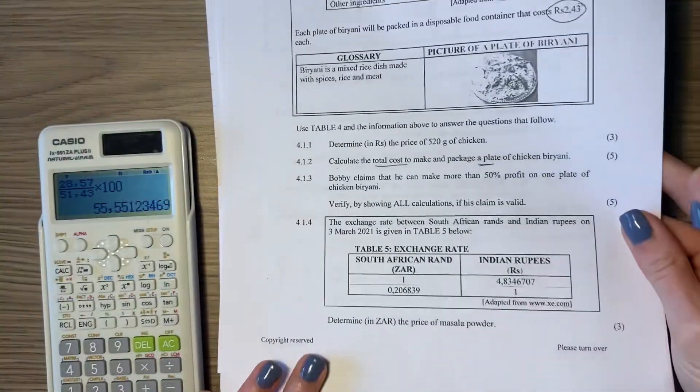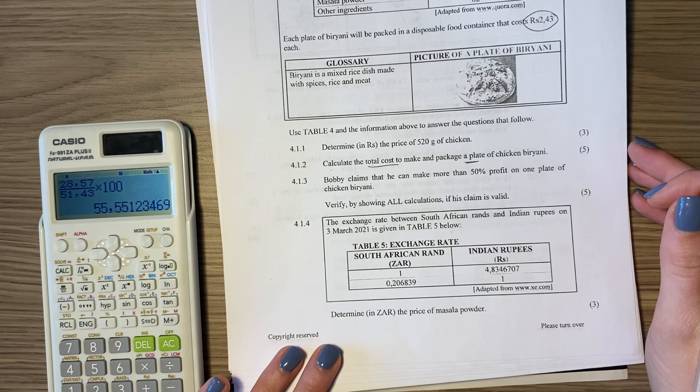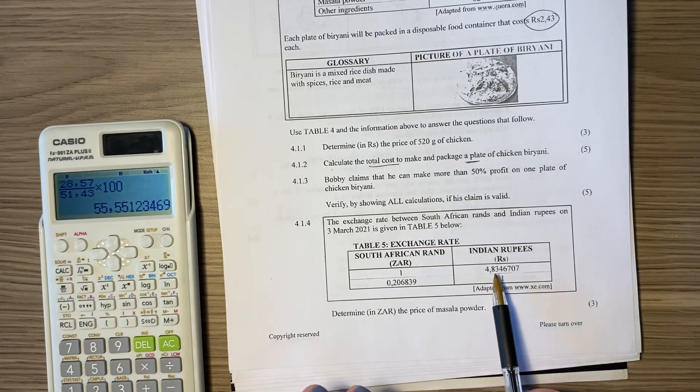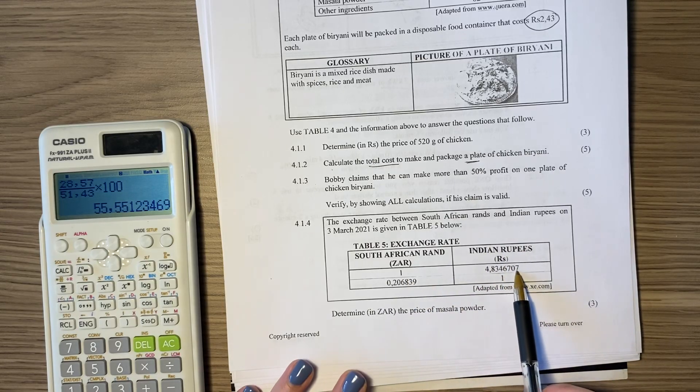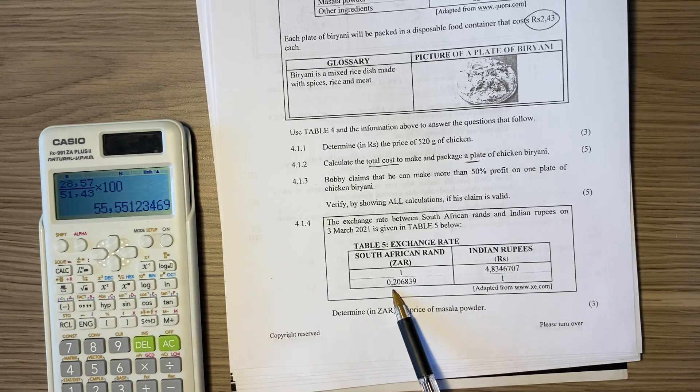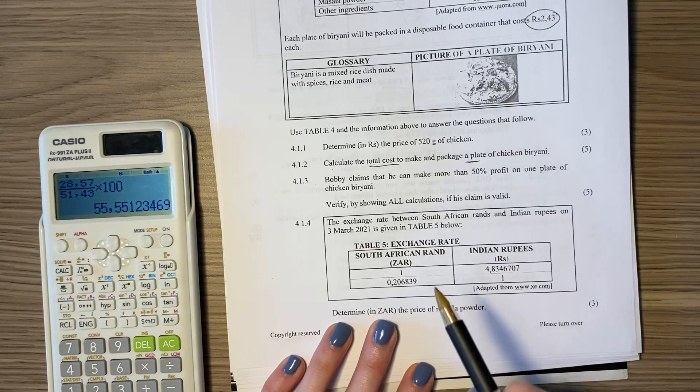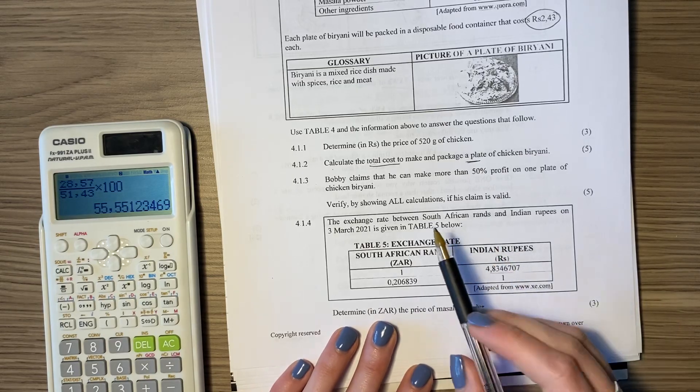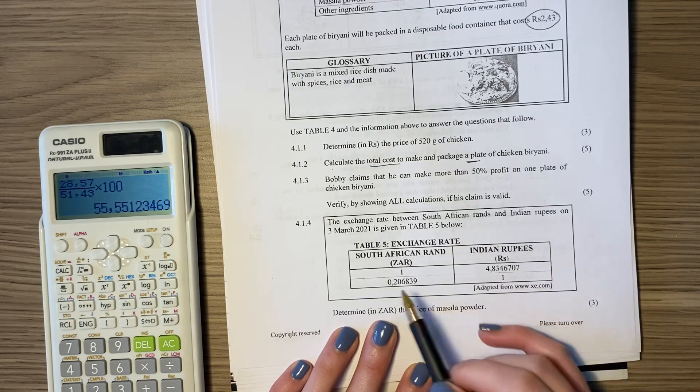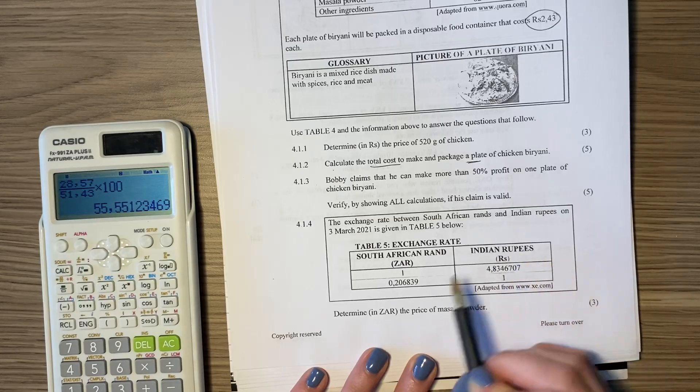Let's do the last question for this video. It says the exchange rate between South African rands and Indian rupees on 3 March 2021 is given in Table 5 below. So one rand is going to give me 4.83 Indian rupees. Or one Indian rupee is only going to give me that much, that many sort of cents. It's not actually a rand. What's important to note here is, you see that the South African rand is stronger than the Indian rupee. So basically, with one rand, you get more rupees than you do when you have one rupee and looking at rands. So that's what we mean when we say a currency is stronger or weaker. Here, South African rand is stronger. Rupee is weaker.